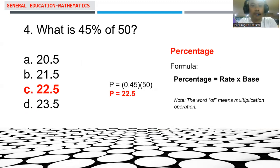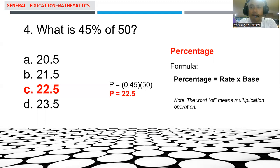Item number 4 is an application of percentage. When computing for percentage, we always recall the general formula: percentage is equal to rate multiplied by the base. Note that when we say percentage, this is not the number with the percent symbol — that is actually the rate.